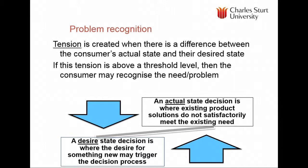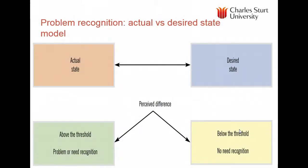Problem recognition occurs between the tension between two states: your actual state, which doesn't satisfactorily meet existing needs, and a desired state, where something may trigger the decision process. We may run out of sugar or milk — that's our actual state — and that triggers the need for a new product or service. Or a desired state such as a need for holiday or rest may trigger problem recognition. Consumers are motivated when the difference between actual and desired state is above the threshold.